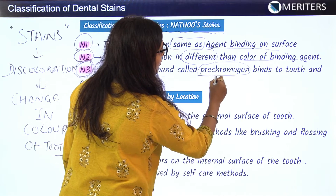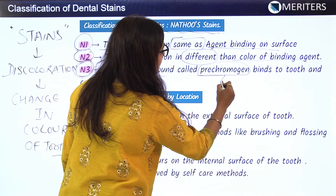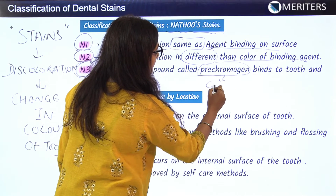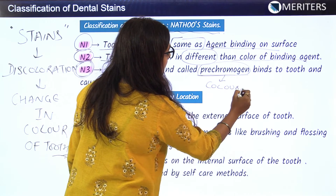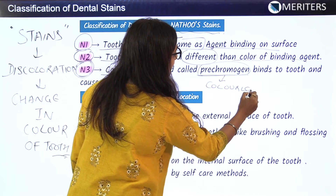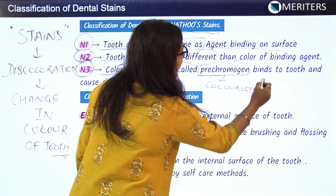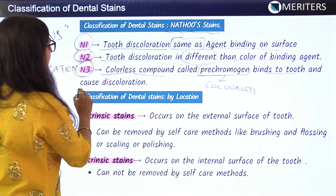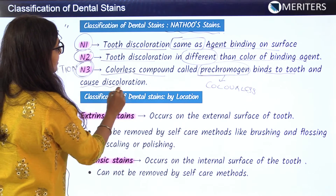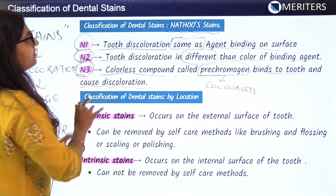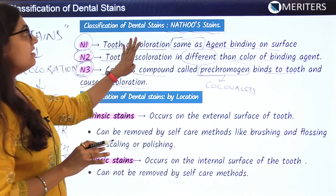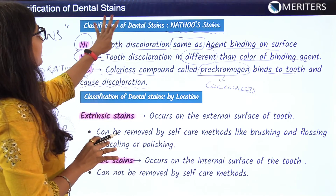N3 is where the agent is a colorless compound called pre-chromogen. This pre-chromogen is colorless, binds to the tooth, and causes a discoloration. This is the N3 classification of tooth stains.